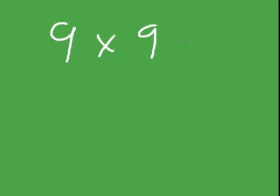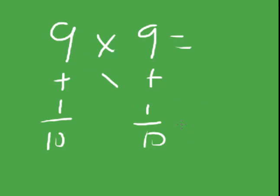9 times 9 equals, so we just do this, 9 plus 1 equals 10, 9 plus 1 equals 10 again. So then we go 9 minus 1 equals 8. So our answer is going to be 80-something. And we look right here, 1 times 1 is 1. So our answer is 81.